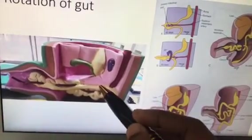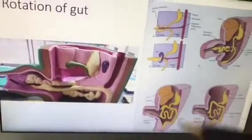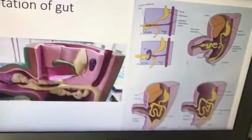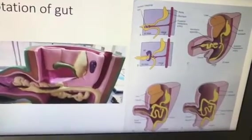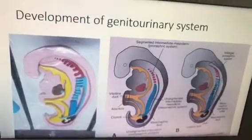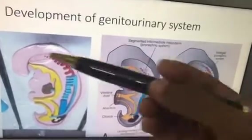To summarize gut rotation: at the sixth week there is 90-degree rotation when the gut comes out; at the tenth week there is 180-degree rotation when it returns; the total rotation is 270 degrees.